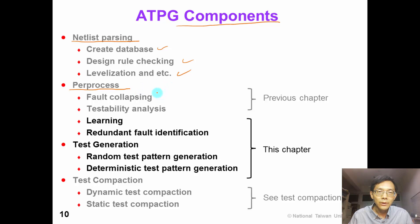In the pre-process stage, we need to perform fault-collapsing, testability analysis. These two topics have been covered in our previous chapter. After that, we also need to do some learning and redundant fault identification. In the test generation stage, we can have random pattern generation or deterministic test pattern generation.